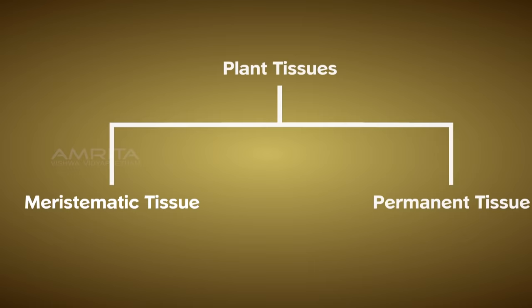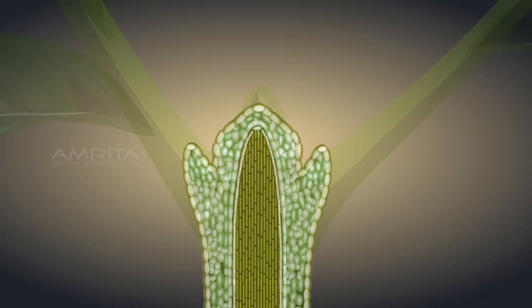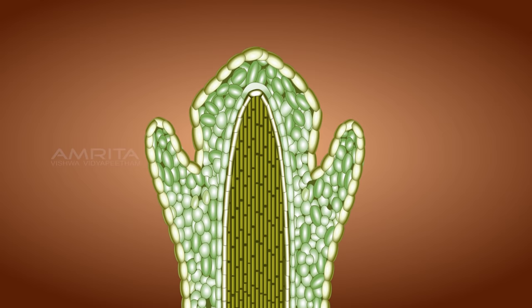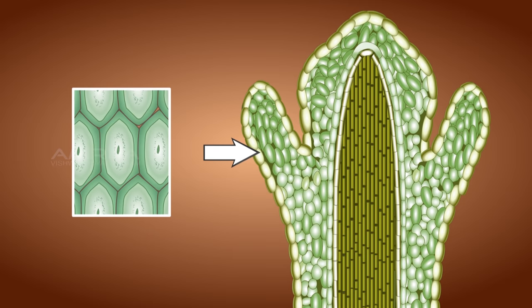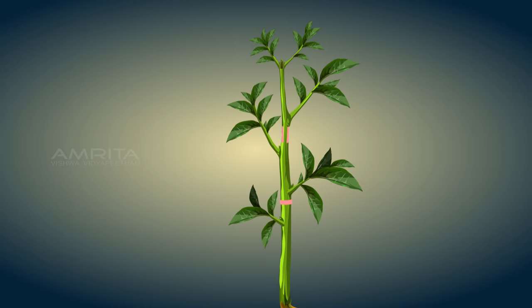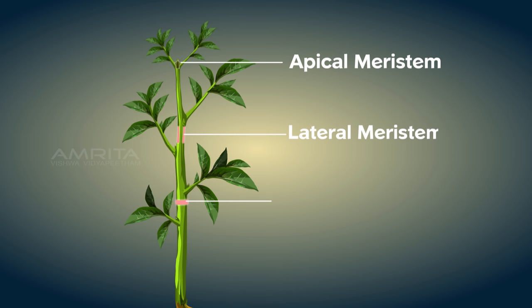Let us first look at the meristematic tissue. It is the meristematic tissues that help in the growth of a plant, as they have the ability to divide themselves. Their cells are similar, generally small, enclosed within thin walls and cubicle in shape. Depending on the region they are present in, meristematic tissues are classified as apical, lateral and intercalary.